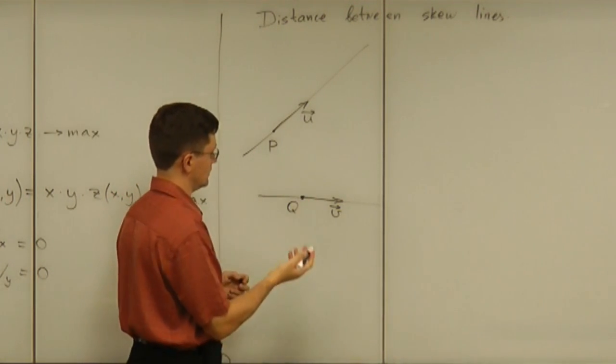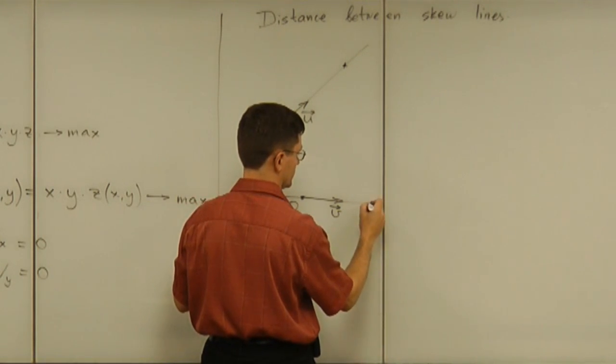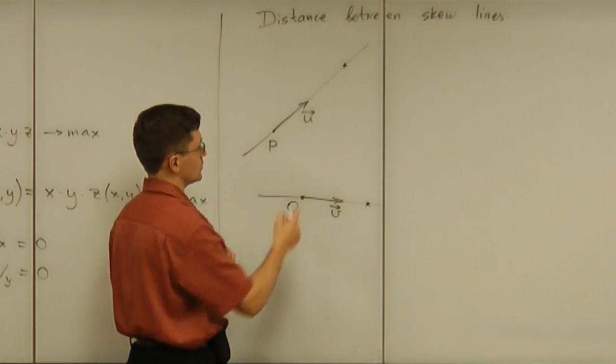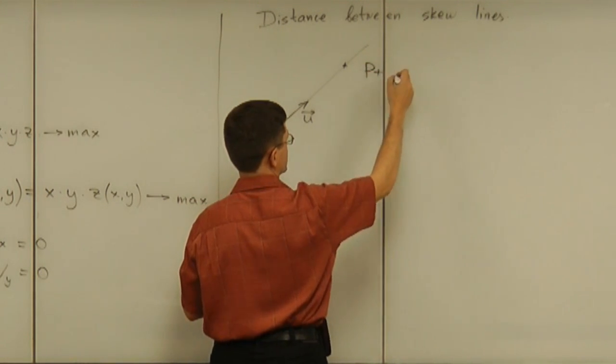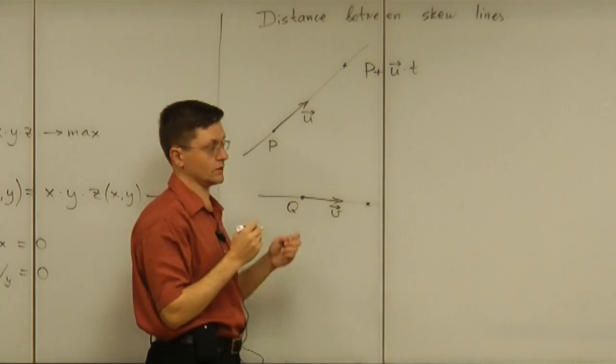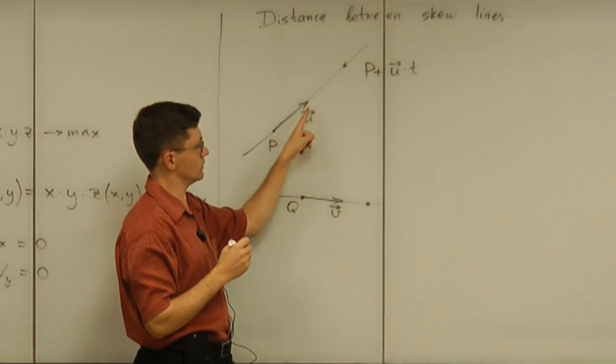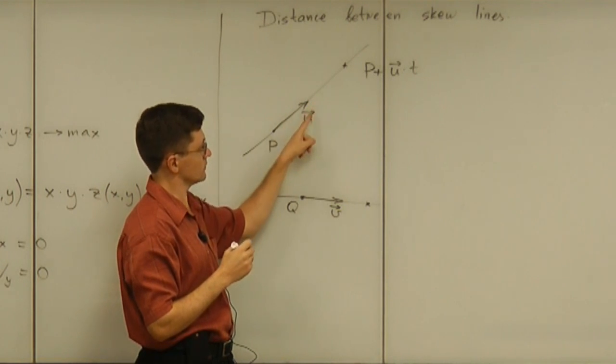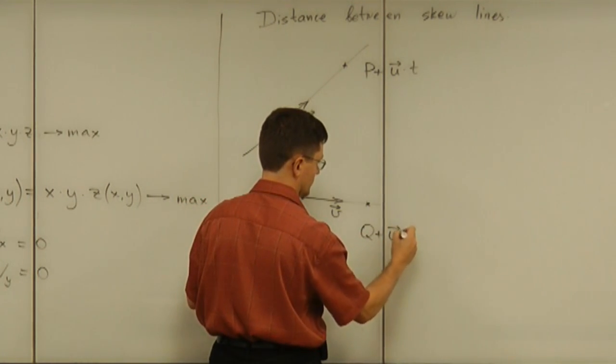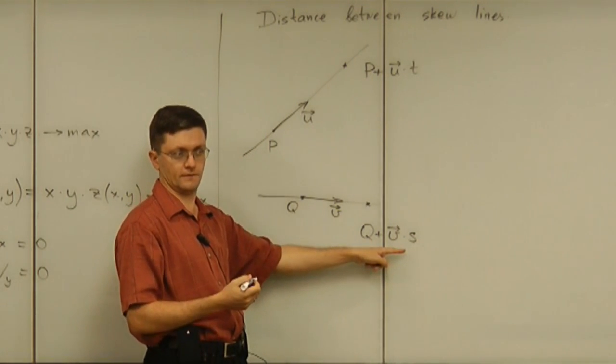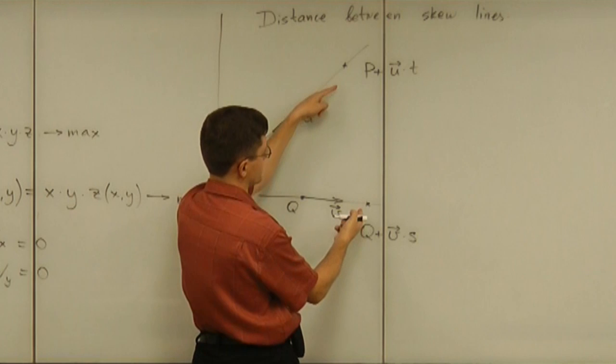And then what we do is we pretend we have a point on the first line, a point on the second line. And what kind of point is that? Well, that is a point like p plus u multiplied by some time t. So, the point shows up here on the first line if you start at p and follow the line with that velocity for some time t. And the point on this line shows up as q plus that velocity multiplied by a different time s. We don't assume now that these two times are exactly the same.